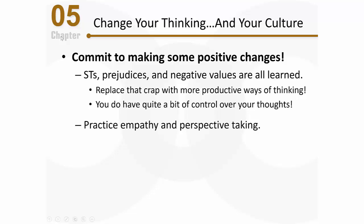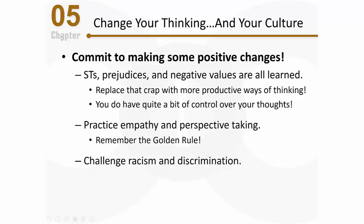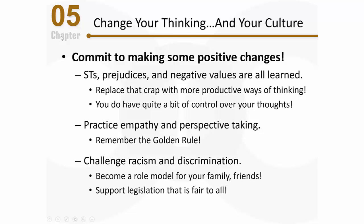Another thing I ask you to do is practice empathy and perspective taking. Empathy is really understanding how someone feels and being able to feel how they feel. Perspective taking is about understanding what someone is thinking from their point of view. If you're practicing empathy and perspective taking, you're more likely to remember the golden rule — do unto others as you would have them do unto you. Consider challenging racism and discrimination when you see it. Consider becoming a role model for your family and friends — you'll be surprised how influential you can be. Consider supporting legislation that's fair to everybody. Think about how much change has taken place after laws abolished slavery, provided voting rights to women and minorities, and established fair housing laws. The direction our society turns is up to us.